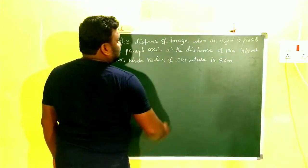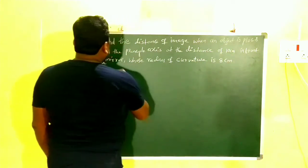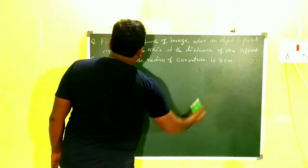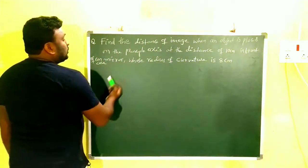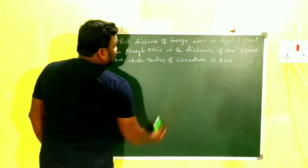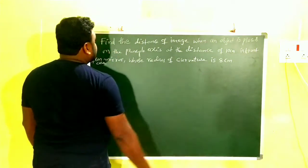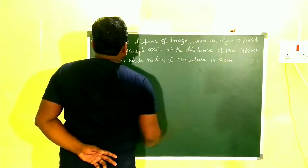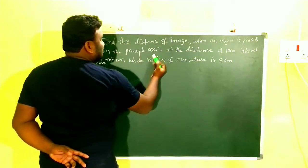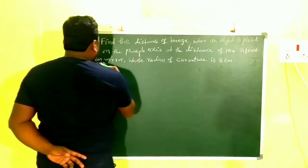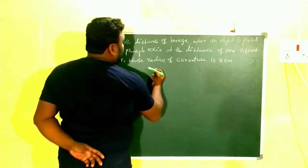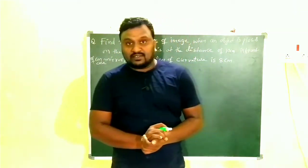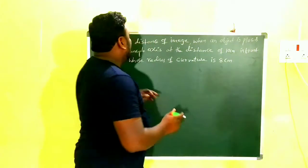Find the distance of image when an object is placed on the principal axis at a distance of 10 centimeters in front of a concave mirror whose radius of curvature is 8 centimeters.